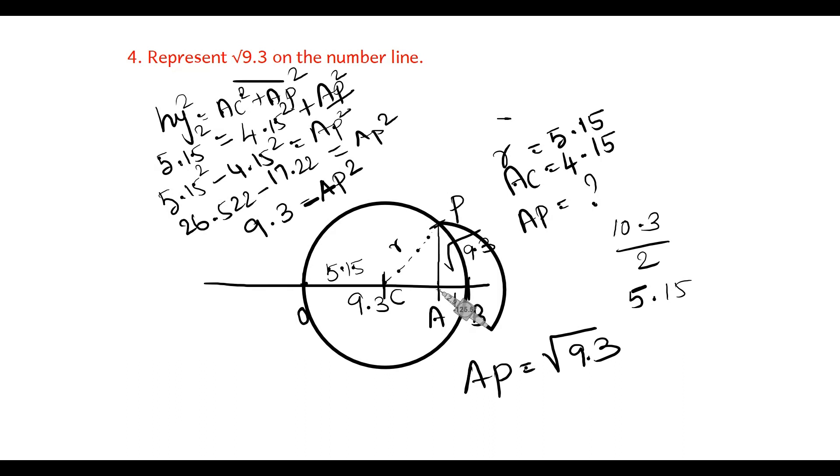With AP as radius, draw an arc from P to the number line. It will cut at D. So this is the point where root of 9.3 is lying in the number line.